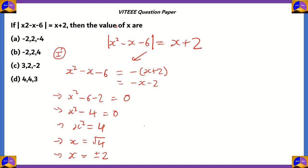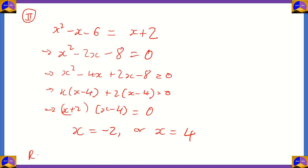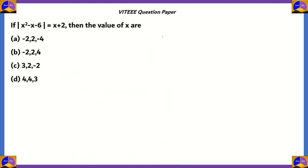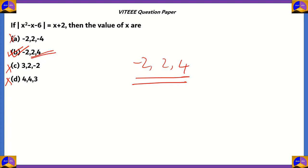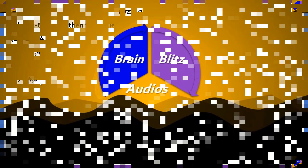Combining both cases, the values of x are +2, −2, and 4. Looking at the options, option B gives −2, 2, and 4, which matches. Option A has −4 (incorrect), option C has 3 instead of 4 (incorrect), and option D has 2, 4, and 3 (also incorrect). Therefore the correct answer is option B: x = −2, 2, and 4.